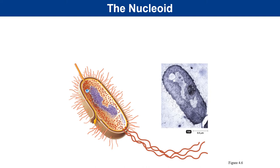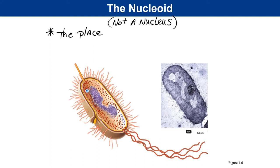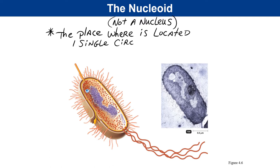Internal to the plasma membrane is the nucleoid — not to be confused with the nucleus. The suffix -oid means 'like,' so it is somewhat like a nucleus, but with no membrane. The nucleoid is the region where DNA is located, and that DNA consists of one single circular chromosome, which the vast majority of bacteria are known to have.